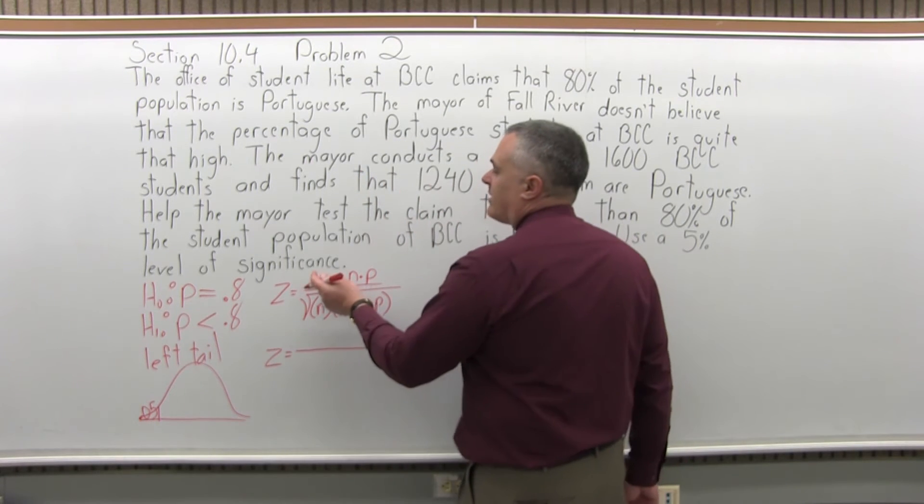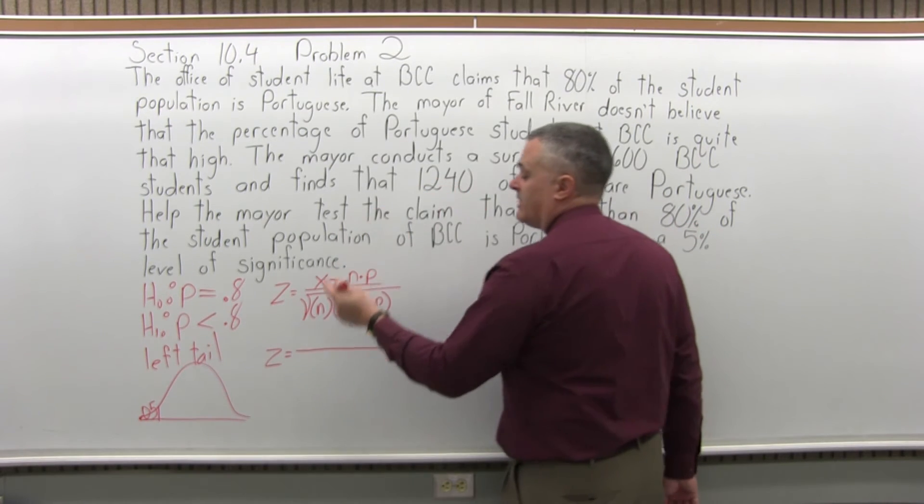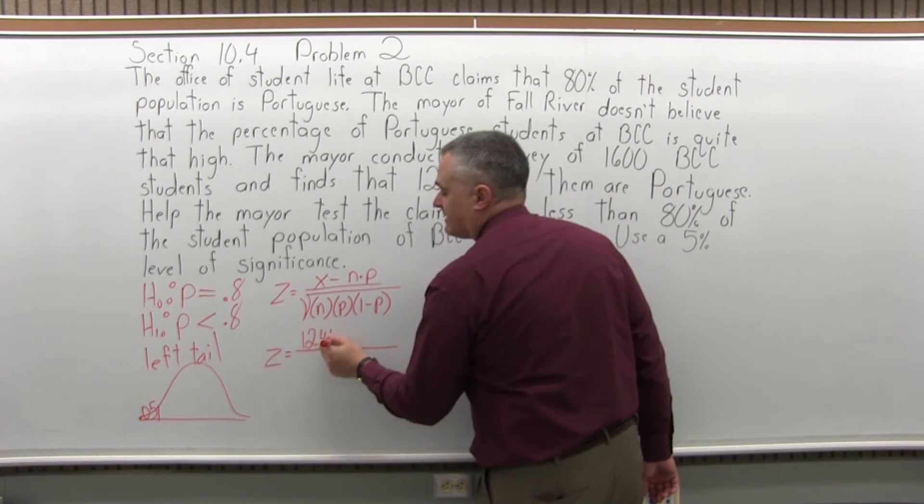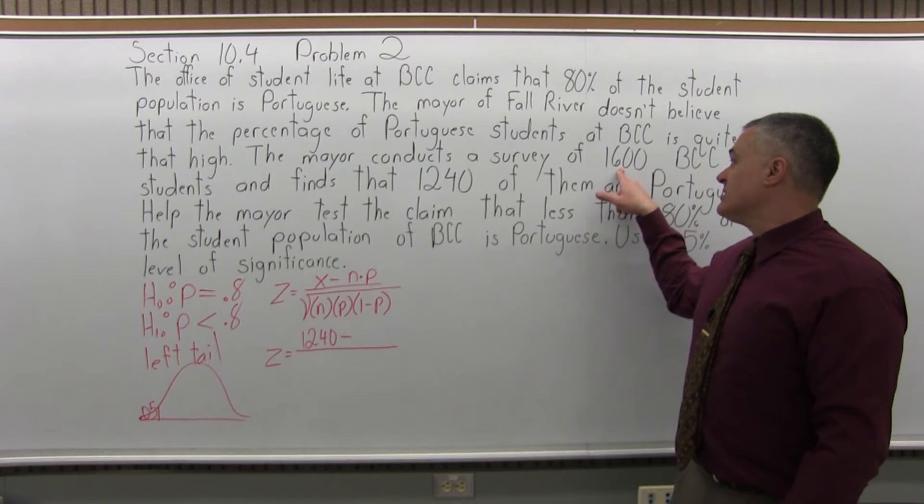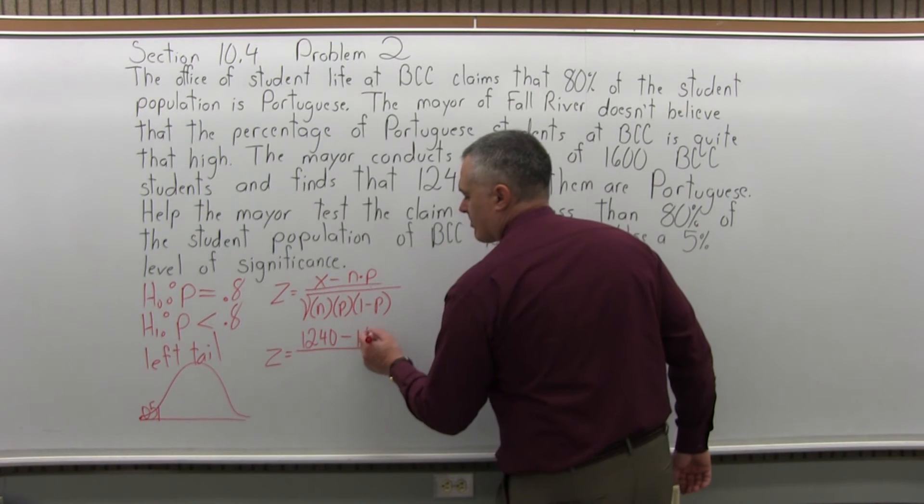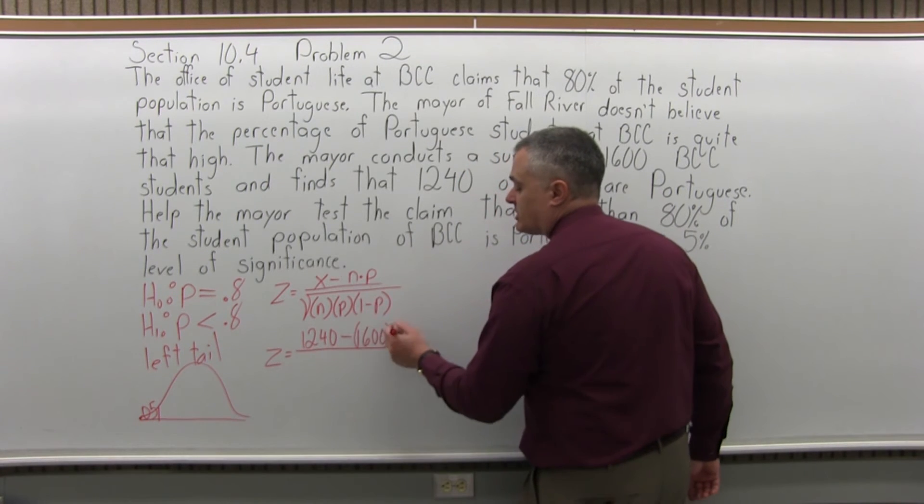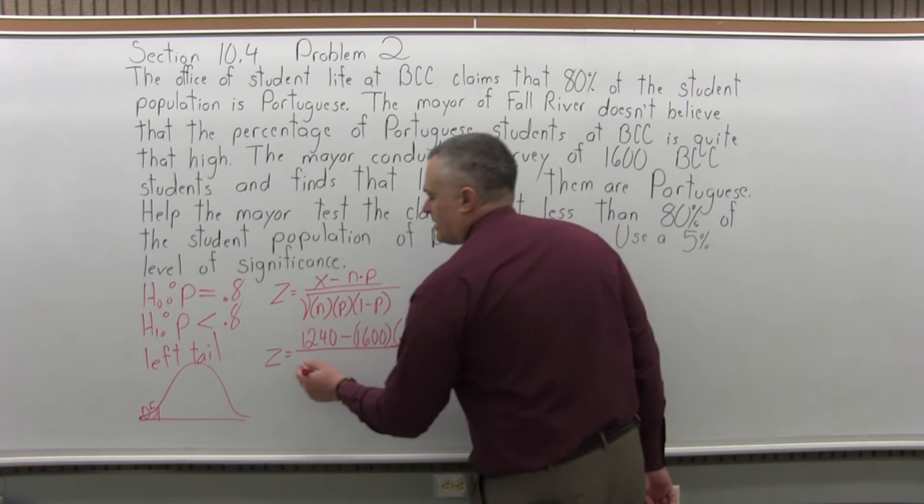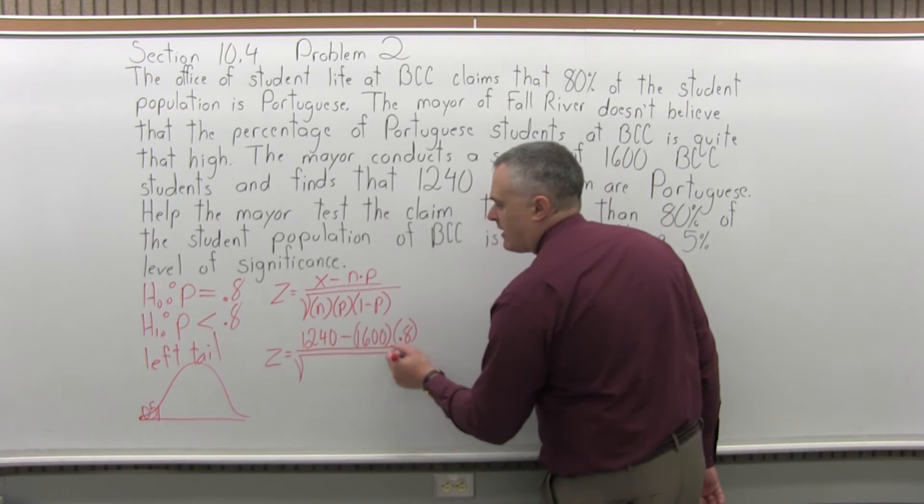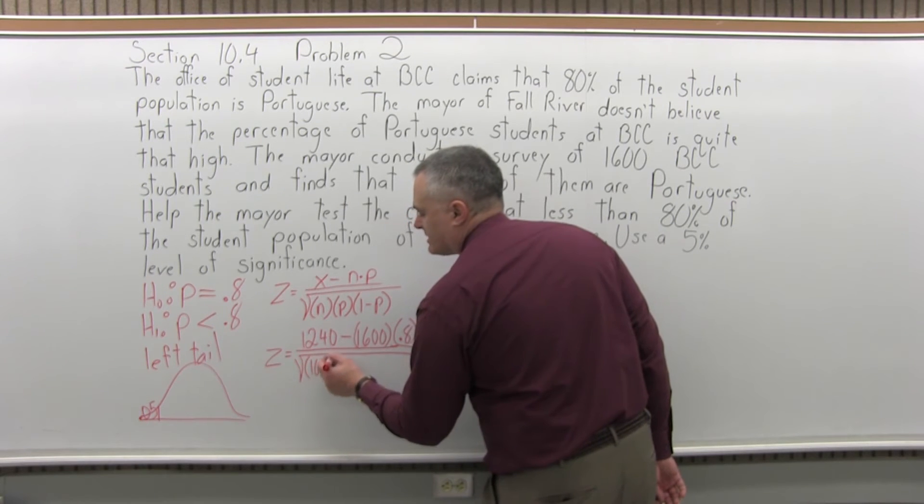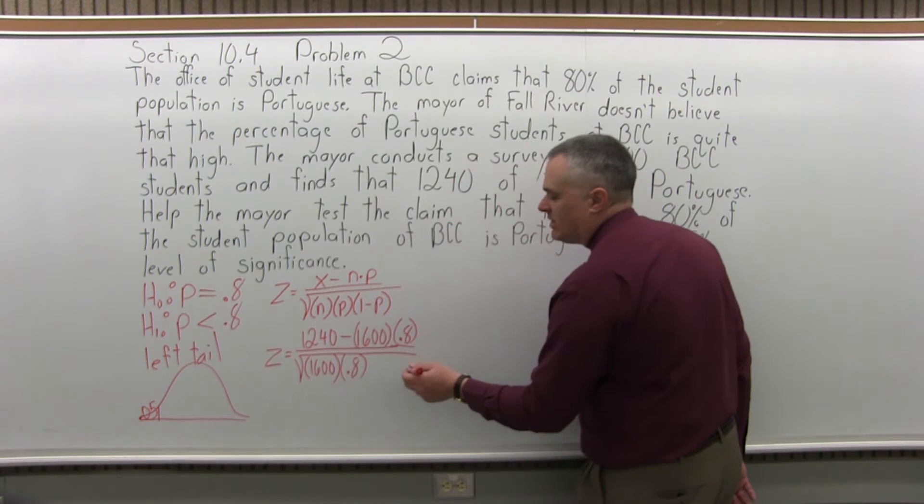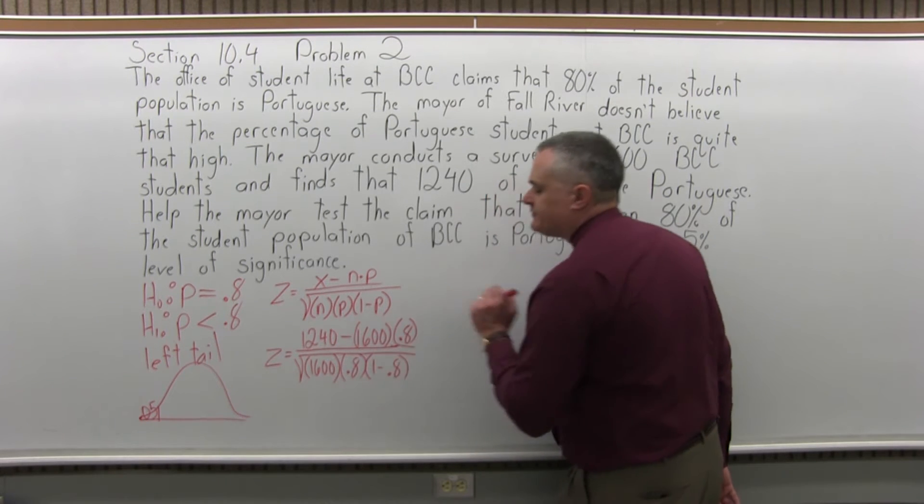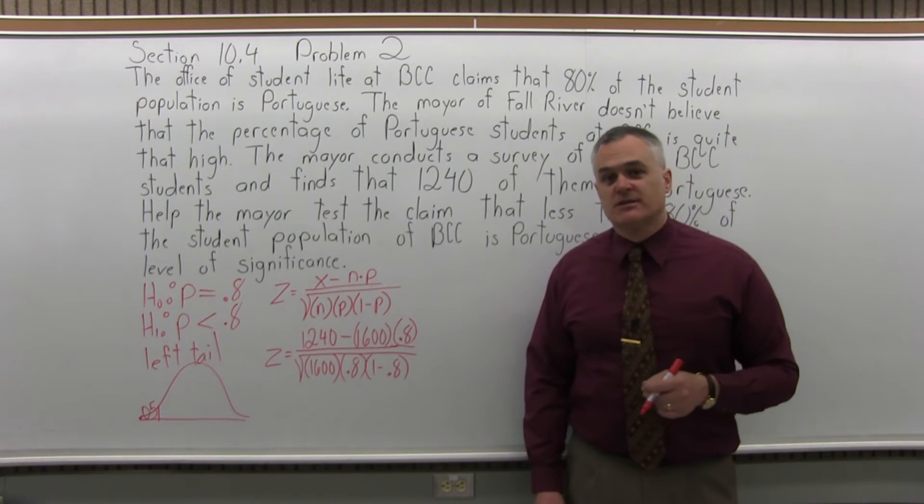z equals, so x, our observed number of successes is 1,240. That's how many actual Portuguese students that the mayor was able to find in the sample, minus n, the size of the sample. The total number of students in the sample is 1,600 times p, the proportion that we're testing, is 0.8. And in the denominator, there's a square root. So n, the size of our sample, is 1,600. p is 0.8, the 80% as a decimal. 1 minus p is 1 minus 0.8. So now that the formula is filled out, we'll go ahead and start some of the computation.